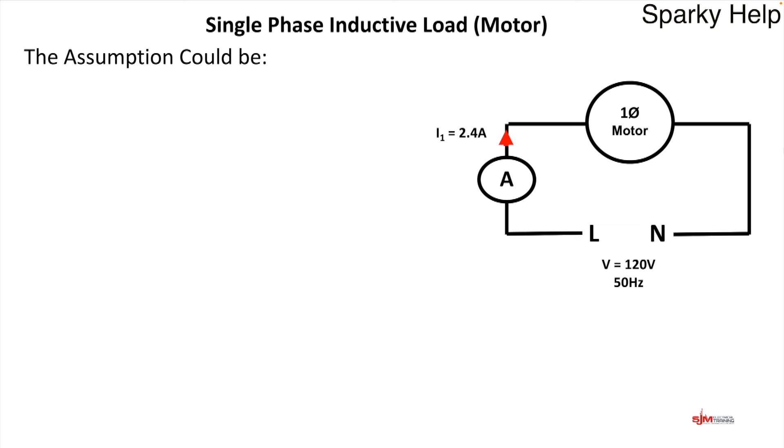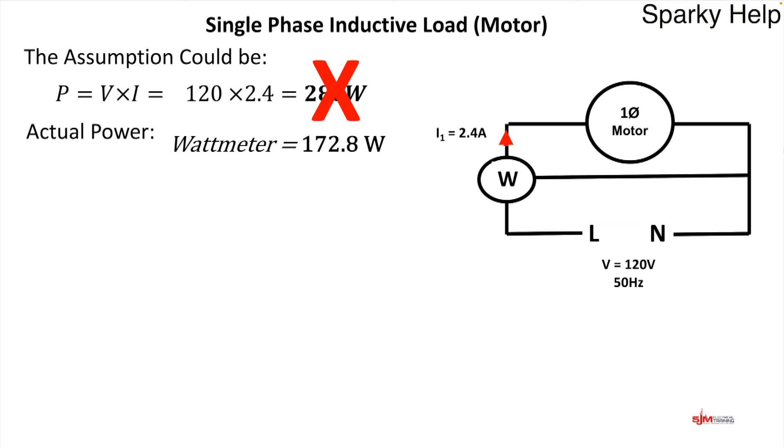Now, this is a particular motor. That's what it could be. So we'll take it that same circuit is a single phase inductive motor, which I don't know why I said inductive. They're all inductive. So we could work out what the assumed power consumption would be. So V times I would be 120 times 2.4, which would be 288 watts. But again, this would be wrong because this is not the power.